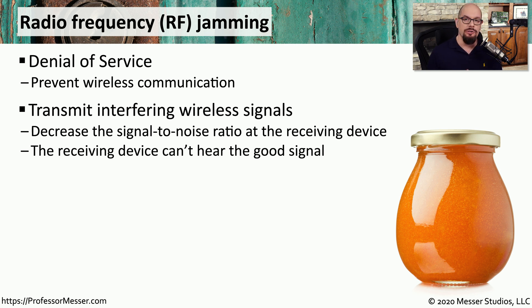The signal to noise ratio describes the relationship between the good signal received by a device and all of the other types of wireless signal received by that device. As long as the good part of the wireless signal is received and understood above all of the other noise in that particular spectrum, then the signal is able to be received and communication can continue.